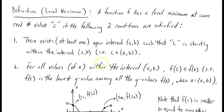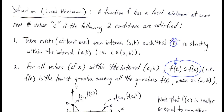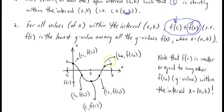For a local minimum, it's the same flavor of definition. The only difference is that F(C) is smaller than or equal to F(x), meaning the corresponding Y value at X equals C is the lowest value out of all Y values within the open interval from A to B. That's where the dip occurs.